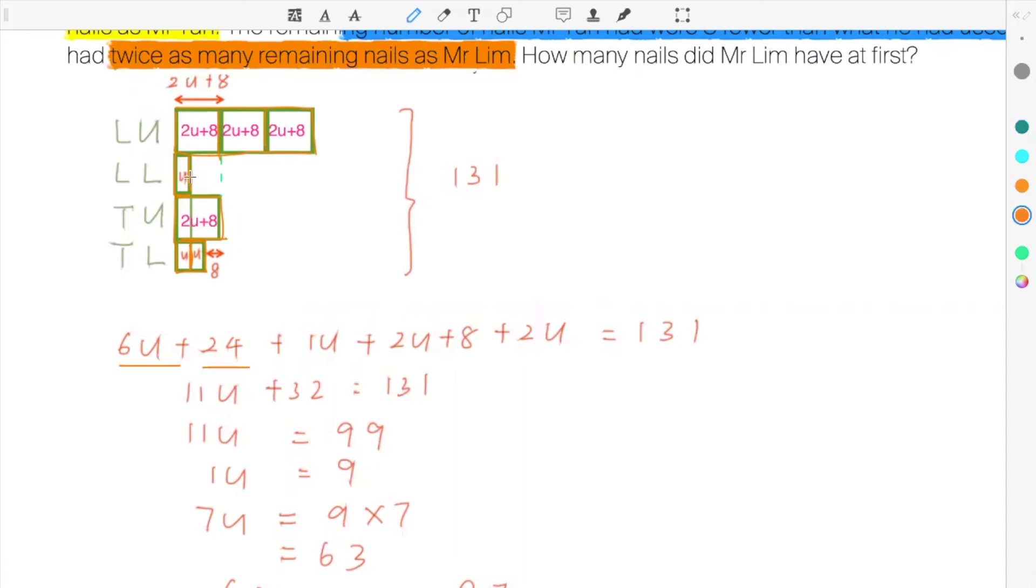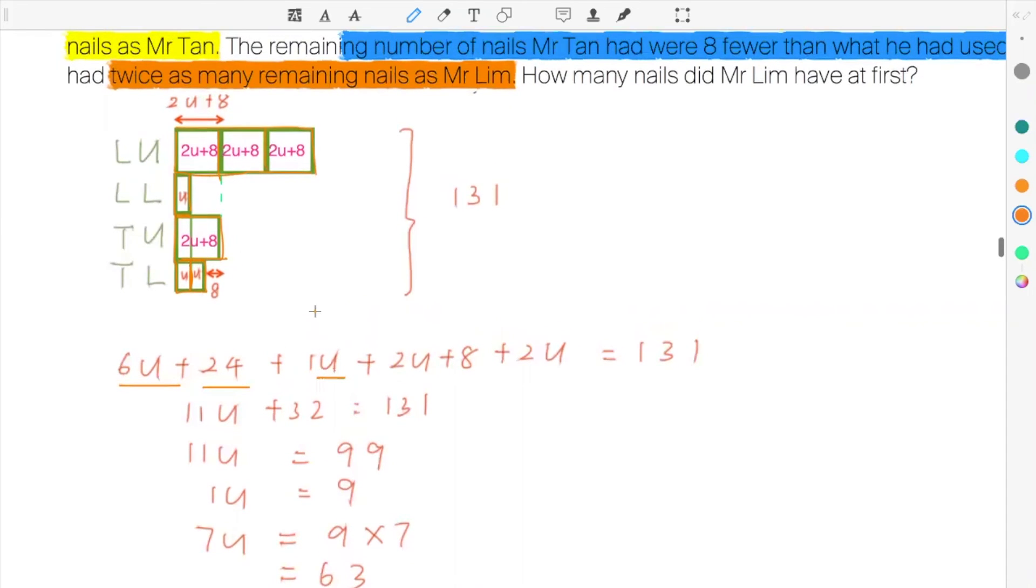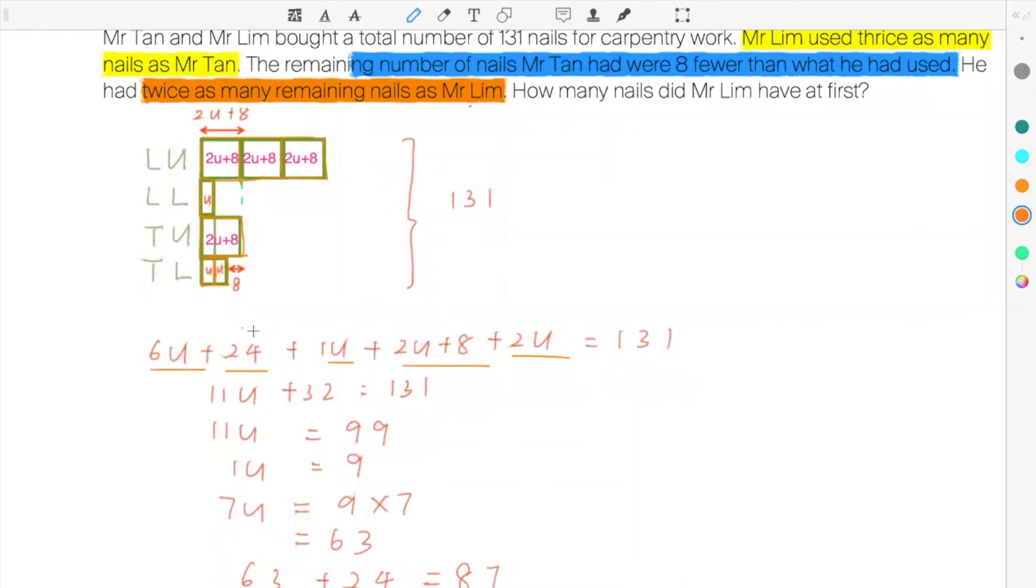And then one U over here for Mr. Lim used. Tan used two U plus eight. Tan left two units. Everything adds up to be 131. Twenty-four plus eight is thirty-two. Six plus one plus two plus two is eleven U. So eleven units plus thirty-two is 131.